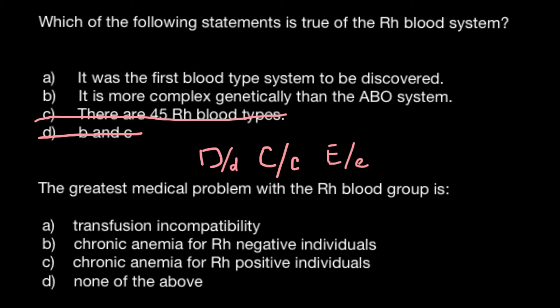We can cross out this answer, and the only correct answer left is B: it is more complex genetically than the ABO blood group system.